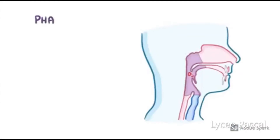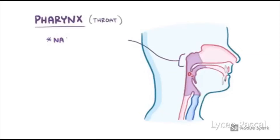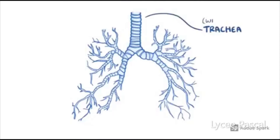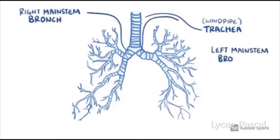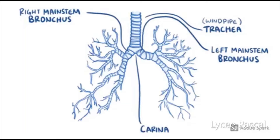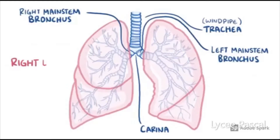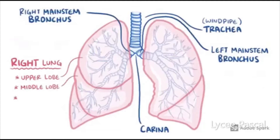From the nasal cavity, air moves to the pharynx or throat, then to the larynx, and then to the trachea or windpipe. It then splits into two bronchi — the left and the right — and enters the lungs. The right lung is formed of three lobes, while the left lung is formed of two lobes: only the upper and the lower.